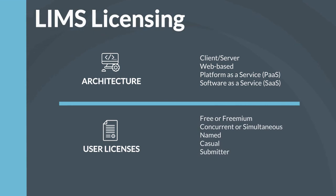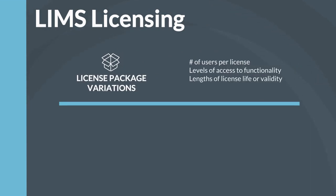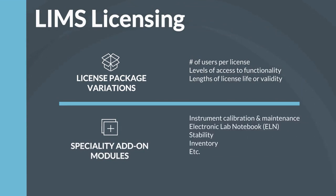LIMS user license types include free or freemium, concurrent or simultaneous, named, casual, and submitter. Different LIMS licenses allow for different numbers of users per license, different levels of access to functionality, and different lengths of license life or validity. Some LIMS also offer specialty add-on modules for additional license fees, such as instrument calibration and maintenance, electronic lab notebook, stability, and inventory.